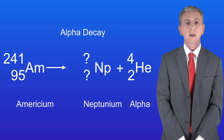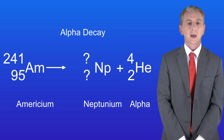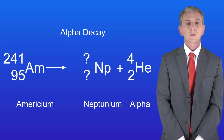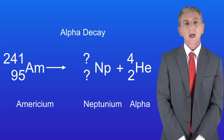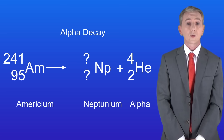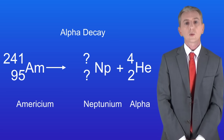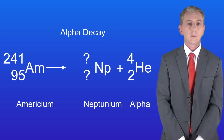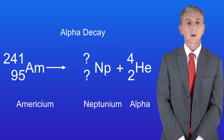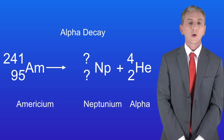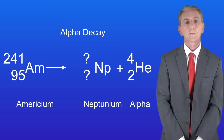Here's one for you to try. This shows the alpha decay of the element americium — the element that we find in smoke detectors. When americium undergoes alpha decay it forms neptunium. I'd like you to work out the atomic number and the mass number of the neptunium. Pause the video now and try this yourself.